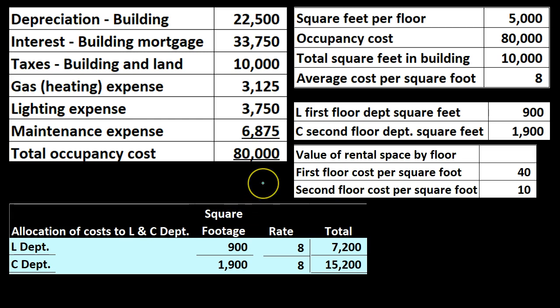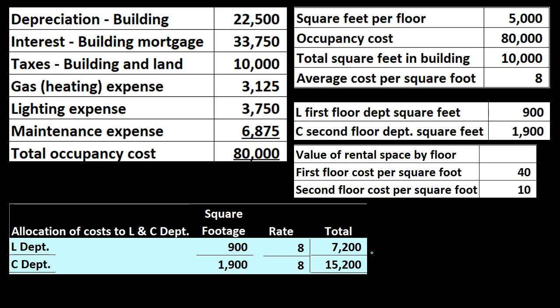Department C's argument is that L is on the first floor, which is much more valuable square footage, yet the allocation treats both floors as completely equal. Looking at floor values: the second floor costs $10 per square foot and the first floor costs $40 per square foot. So C is arguing it doesn't make sense to allocate evenly — more should be allocated to L. Management then has to decide: is it worth adding the complication of accounting for floor values?